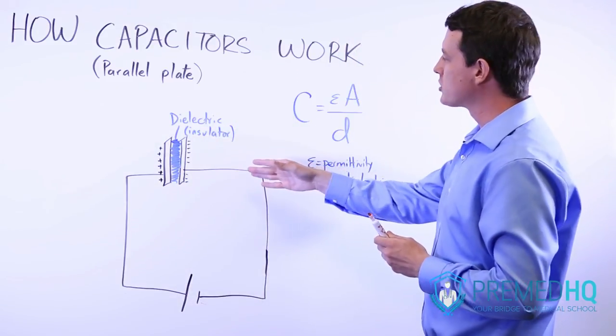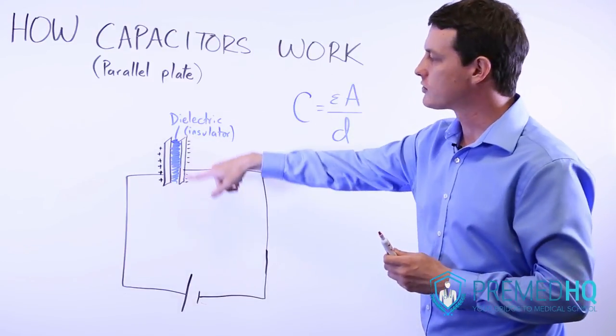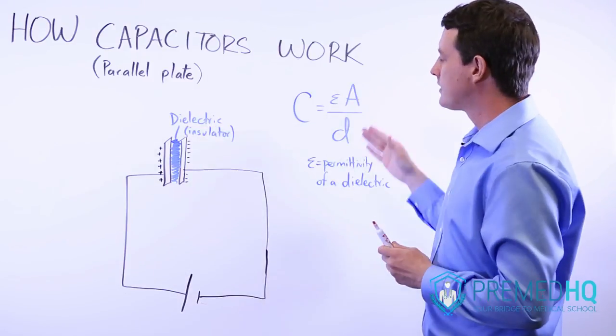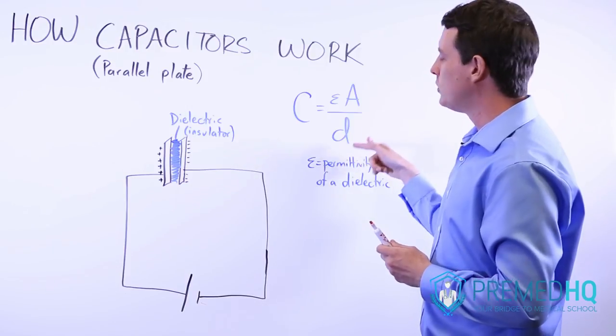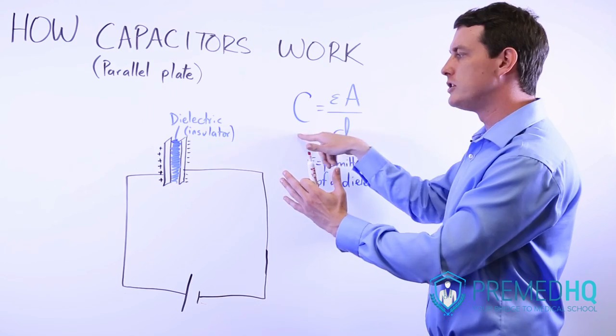This is proportional to the area of these plates, the surface area of these plates, and it's inversely proportional to the distance between them. So if you increase the distance, you reduce the capacitance.